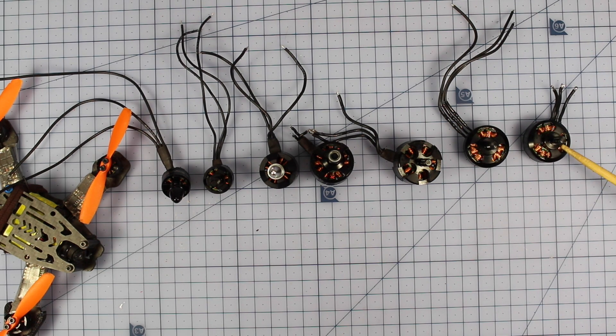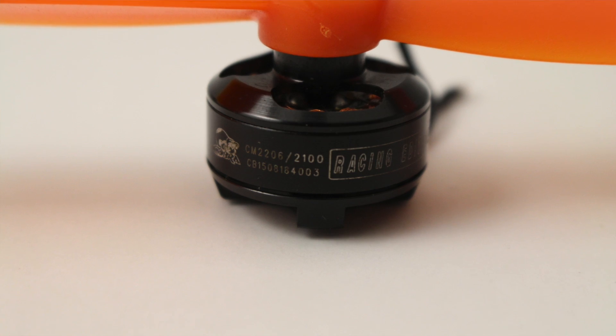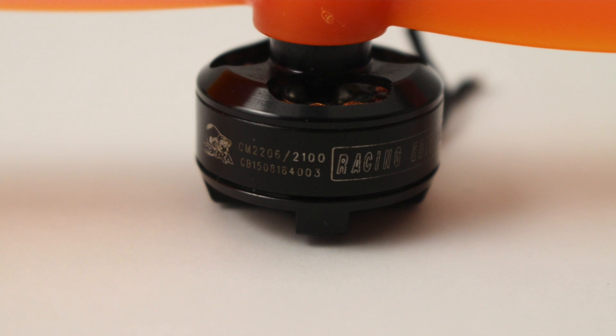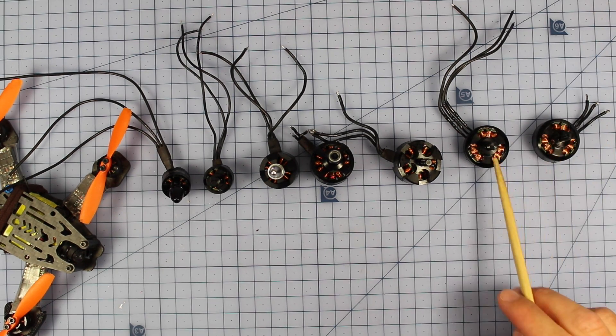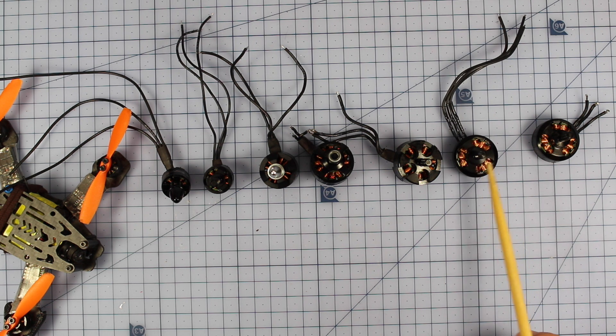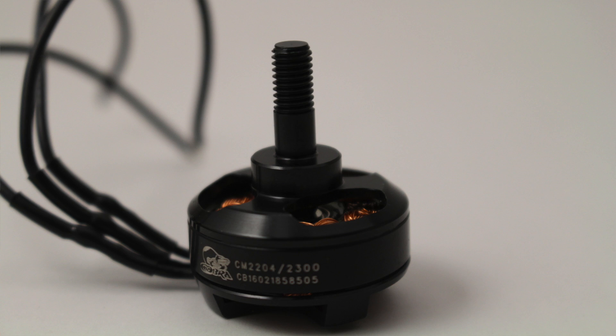This one here, this is a Cobra 2206 2100KV racing motor, and this is probably best suited for some really fast quads, some six inch quads, sort of your drags style quads. We're running some six inch bullnose on these bad boys. Moving down the line into a little bit higher KV, we've got some 2204 2300KV Cobra motors.